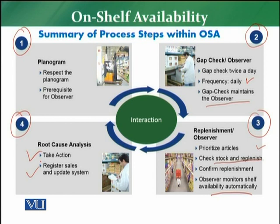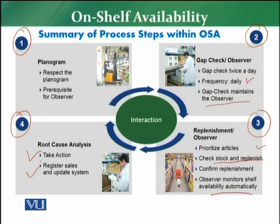Making all four of these points work together will really help in improving on-shelf availability, which is the core requirement for a retail store. When products are available on the shelf, customers are satisfied and gratified — they will not choose a competitor or leave your store. Customer loyalty will increase and your store patronage will grow. Follow the planograms, ensure gaps are properly checked, replenishment is done immediately, and root cause analysis is properly followed so that shelf availability is improved and the overall business of the retail store is positively impacted.